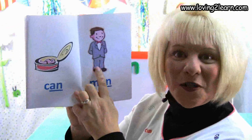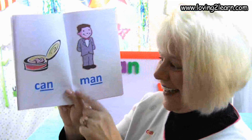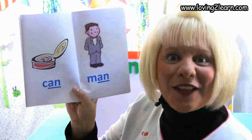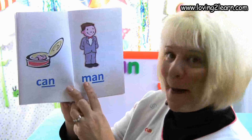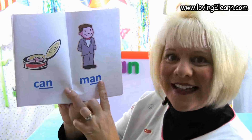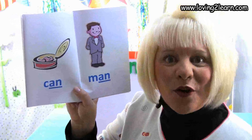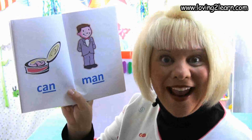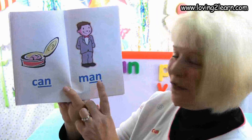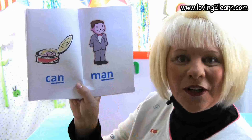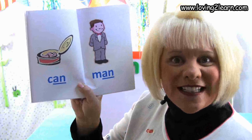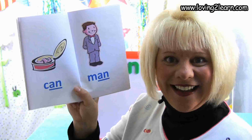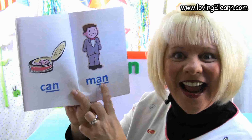Here is a picture of a man. Here's the word man. Let's spell the word man: M-A-N. Where do you see the chunk AN in the word man? You've got it, right at the end of the word. What sound does the AN chunk make? An, an, an.